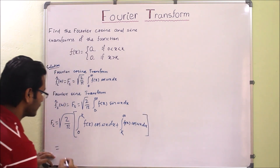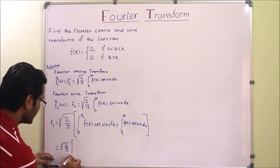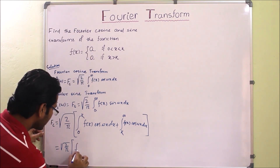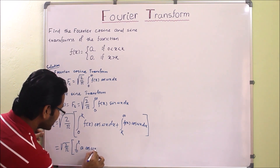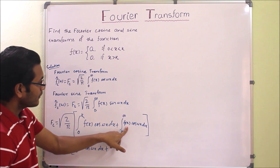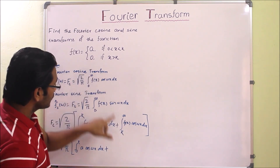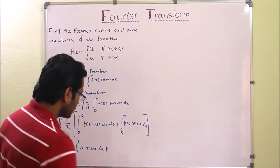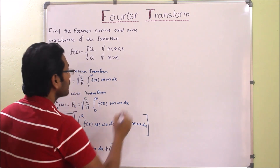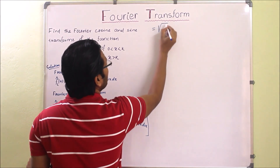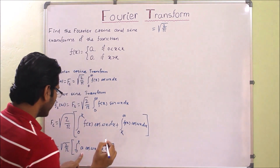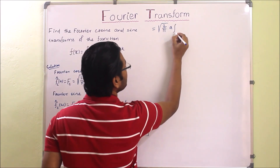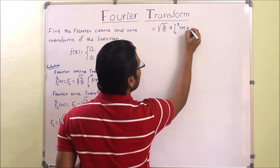So we have square root of 2 over pi times the sum of the two integrals. From 0 to k the function value is a, so we write integration from 0 to k of a cos(wx) dx. From k to infinity the function value is 0, so that term becomes 0. Taking a as a constant outside, we get square root of 2 over pi times a times the integral from 0 to k of cos(wx) dx.